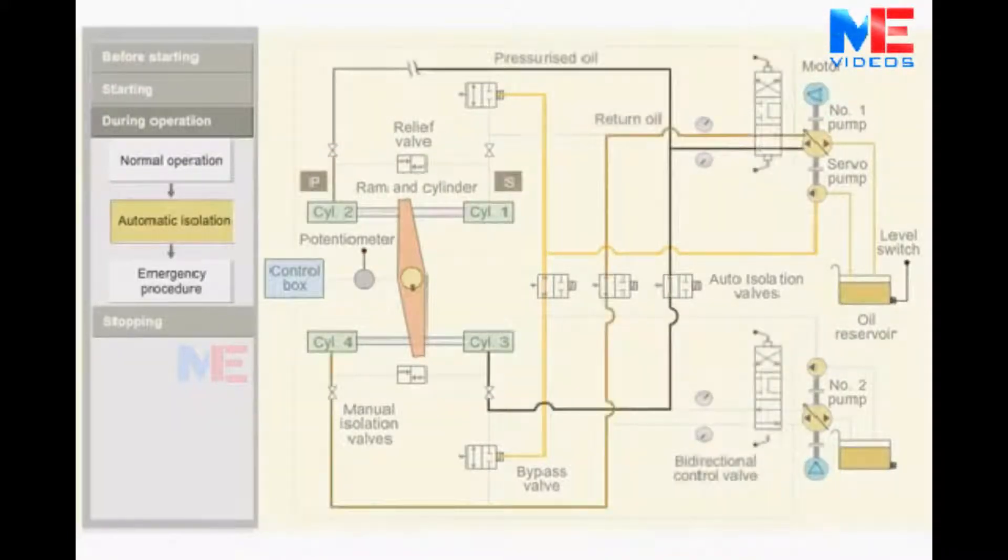Consider during the operation, there is a fracture in one of the pipes. The oil starts leaking and oil level starts dropping in the oil reservoir. The low level alarm is raised. If the leak is severe, then low level alarm sounds and the system gets automatically isolated in the following way.